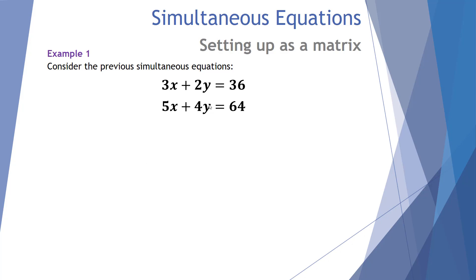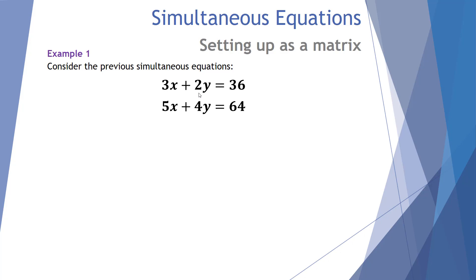Let's look at this example — our previous simultaneous equation. We're going to set up our matrix expression and fill it in. We start with the x variable in the first column: from the first equation we've got a 3, and from the second equation we've got a 5, so the 3 and 5 go in the x column. Then we move to the y's: the 2 from the first equation and the 4 from the second equation go in the second column. So x is in the first column and y is in the second column.